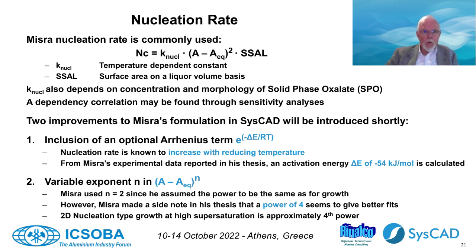Nucleation rate. The equation that is often used, also in CISCAP, is the one by Chuck Misra from his PhD thesis of 1970. We know that nucleation rate increases with reducing temperature. From data in Misra's thesis, I have calculated an activation energy of minus 54 kilojoule per mole. The supersaturation power is 2. Interestingly, Misra made a side note in his thesis that a power of 4 seems to give better fits at certain temperatures. This is not a surprise in view of what was just mentioned about growth rate under high supersaturation. In summary, it would be better to include an Arrhenius term in the equation and make the exponent of supersaturation adjustable. The equation in CISCAP will be made more flexible on these two points in the near future.